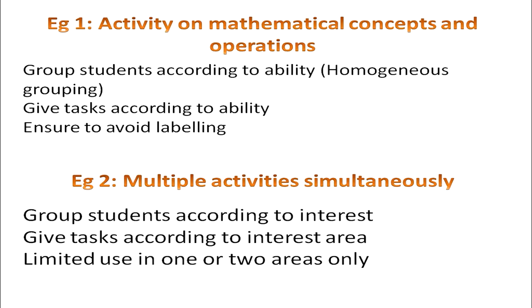The formation of groups depends on the type of activity and its outcomes. For example, if the activity is on mathematical concepts and operations, the teacher can group students according to their ability — a homogeneous grouping — and assign tasks accordingly. The above-average group can be given difficult and challenging tasks, average students can be given simpler tasks, and below-average students can be given quite simple tasks that give them motivation and take them to the next level.